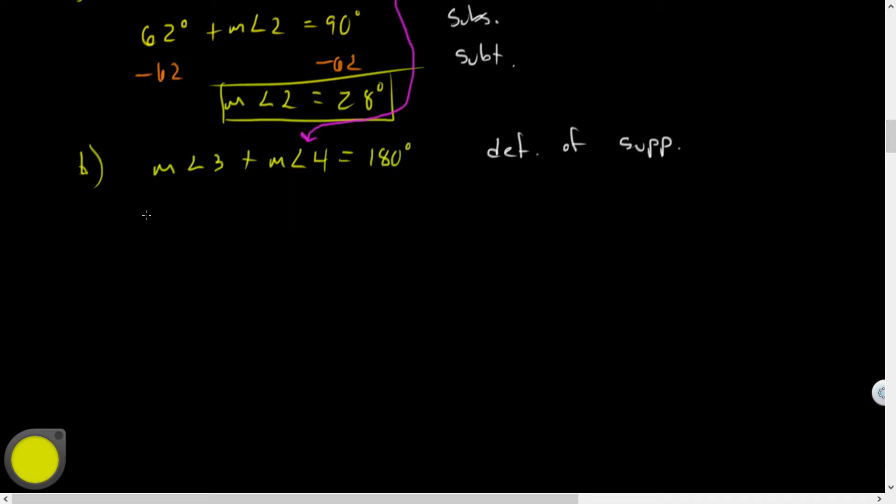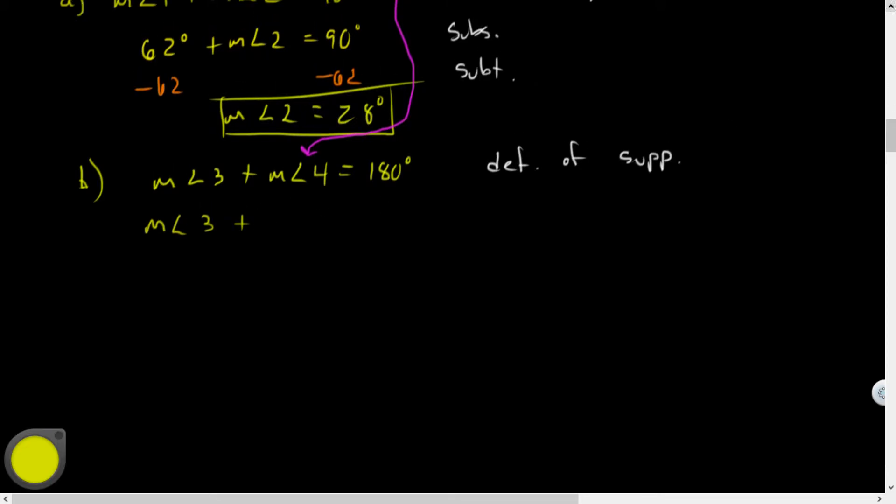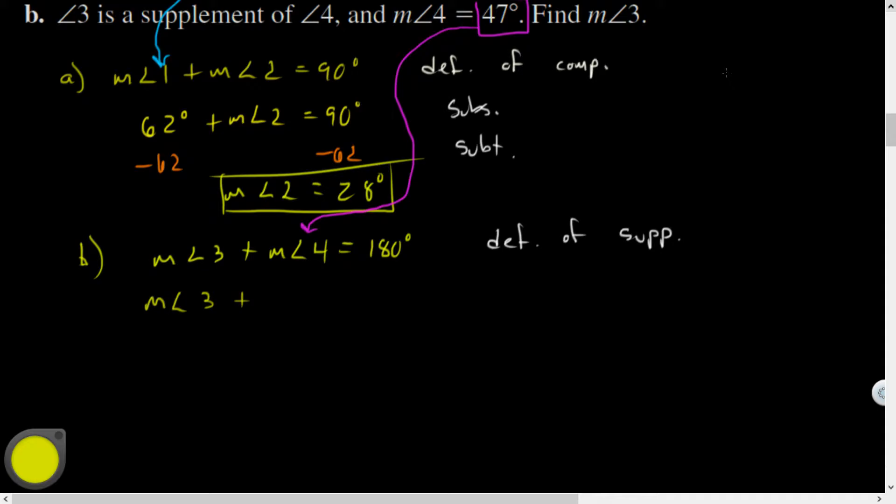I'm being more formal than you'll need to on the homework, but I just want you to—I already forgot what angle measure, 47? 47, yes. So substitute and subtract, and I'm going to get measure angle 3 is equal to, what's that, 133 degrees. So, yeah, nothing too fancy.